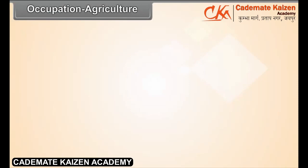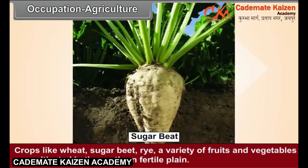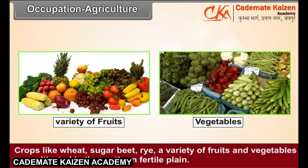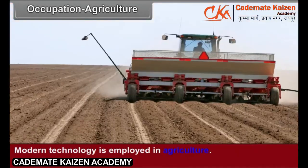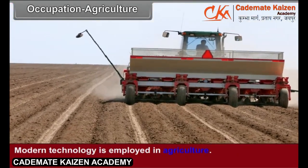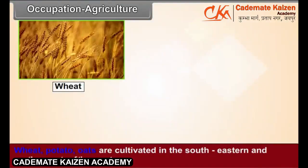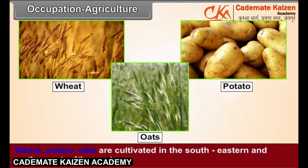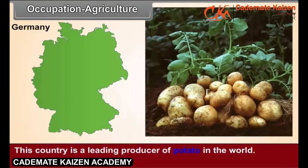Occupation — Agriculture. Crops like wheat, sugar beet, rye, a variety of fruits and vegetables are cultivated in the northern fertile plain. Modern technology is employed in agriculture. Wheat, potato, and oats are cultivated in the southeastern and southern parts of the country. This country is a leading producer of potato in the world.